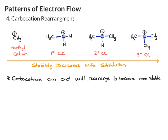There are two main types of carbocation rearrangements. The first is a hydride shift; the second is an alkyl shift. Let's start with the hydride shift. Say we have this carbocation here — what you want to do is look at your carbocation and classify it. That is secondary. Then you want to think about whether you could move it to either adjacent carbon, to consider whether that would become more stable.